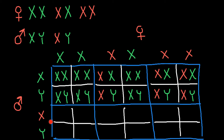Now let's look at the variants where a male has a defective X chromosome, crossed with the three female genotype variants. This affected male gives a defective X chromosome, while the normal mother gives a normal X chromosome, producing carrier daughters and normal sons. In the next variant, the affected male is mated with a carrier female — she would not be affected because this is a recessive genetic disorder.